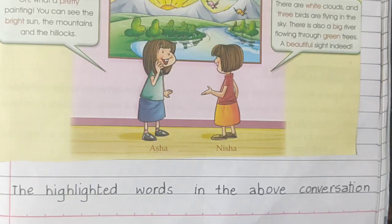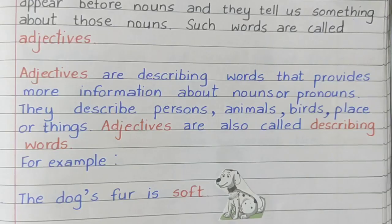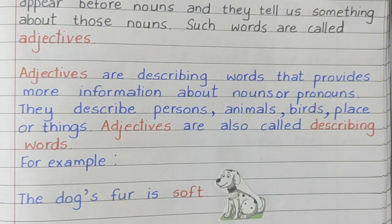The highlighted words in the above conversation appear before nouns and they tell us something about nouns. Such words are called adjectives. Adjectives are describing words that provide more information about nouns or pronouns. They describe persons, animals, birds, places or things. Adjectives are also called describing words.